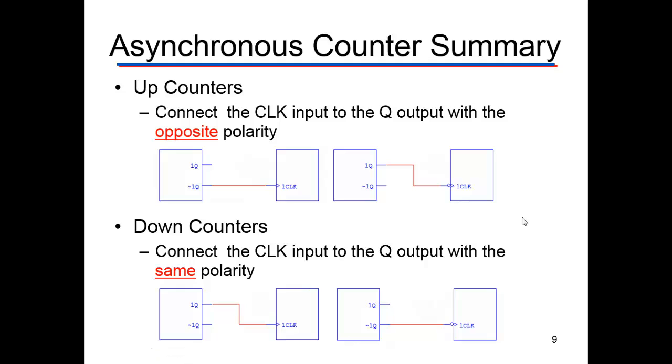Up counters: you connect the clock to the input Q input with the opposite polarity. This is a positive edge triggered clock and you tie it to not Q. This is a negative edge triggered clock and you tie it to Q. Down counters have the same polarity. Q to positive edge, not Q to negative edge. We tie it there.